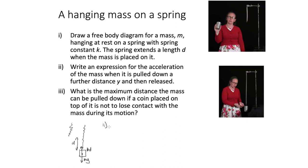Part two asks us to write an expression for the acceleration of the mass when it is pulled down a further distance y and then released. At this point the mass is at rest, so ma equals minus ky, and therefore the acceleration equals minus ky over m. The negative sign shows that the acceleration is directed back towards the equilibrium position.